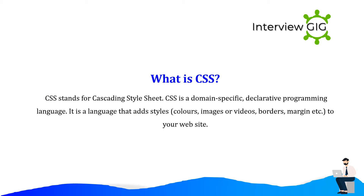What is CSS? CSS stands for Cascading Style Sheet. CSS is a domain-specific, declarative programming language. It is a language that adds styles, colors, images or videos, borders, margins, etc., to your website.